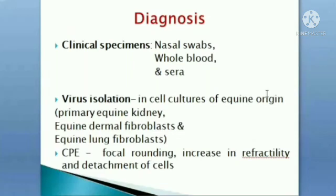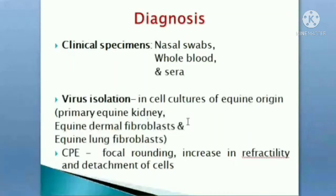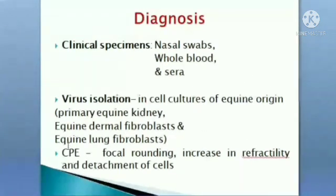For diagnosis, nasal cells, whole blood, or sera are collected. In virus isolation, we perform it in cell lines of equine origin. Equine Herpes Virus 4 grows only in cell cultures of equine origin — specifically primary equine kidney, equine dermal fibroblast, or equine lung fibroblast cell lines.